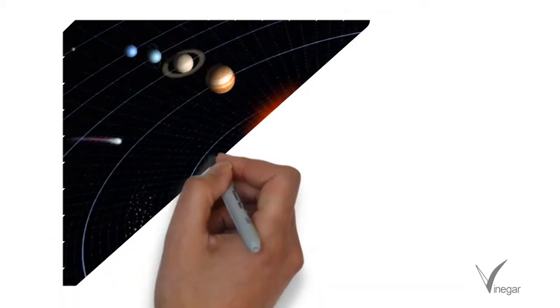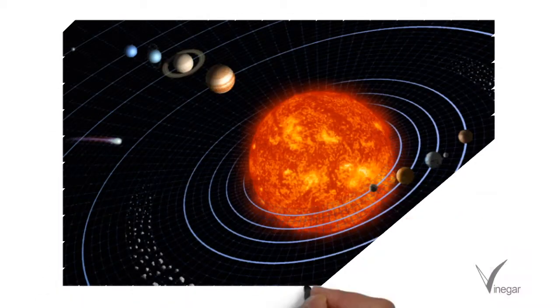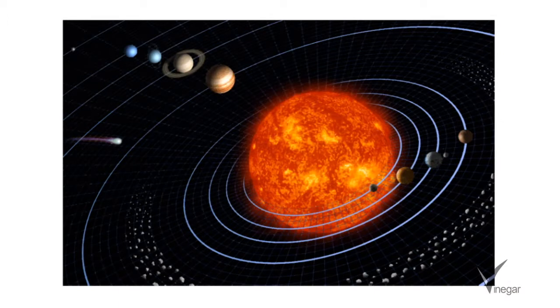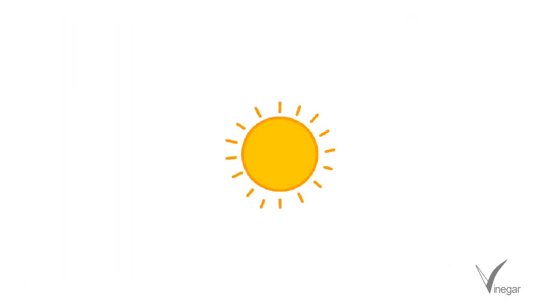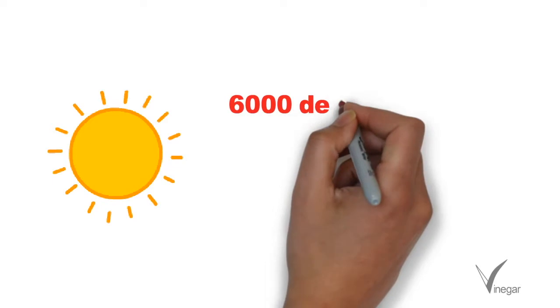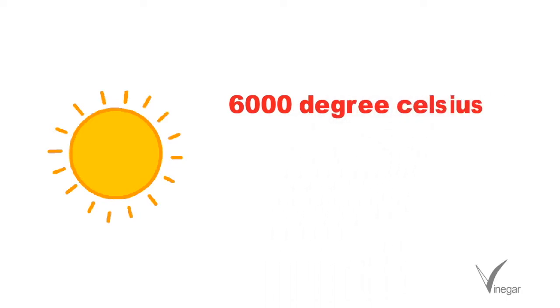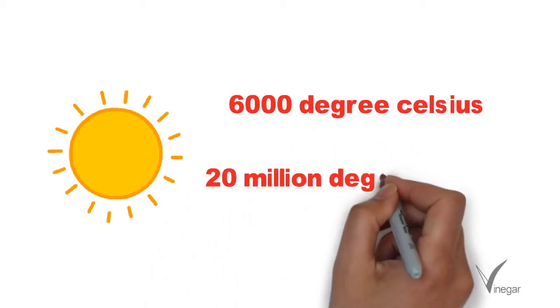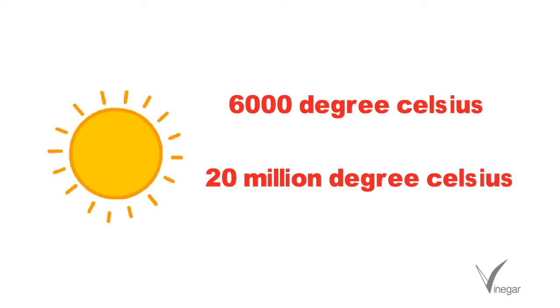All planets revolve around the sun in elliptical orbits and like earth they also shine through reflected light. The surface temperature of the sun is around 6000 degrees celsius and reaches around 20 million degrees celsius as we move towards the interior.